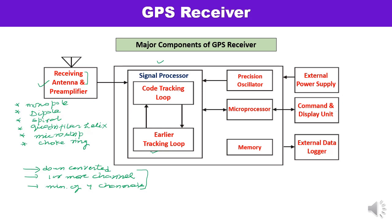The microprocessor is an essential component required to control the operation of the GPS receiver — acquiring the signal, processing the signal, and decoding the broadcast message. There is also a precision oscillator, which generates a reference frequency in the receiver. It is usually a less expensive, lower-performance quartz oscillator, because precision clock information is obtained from the GPS satellite itself.